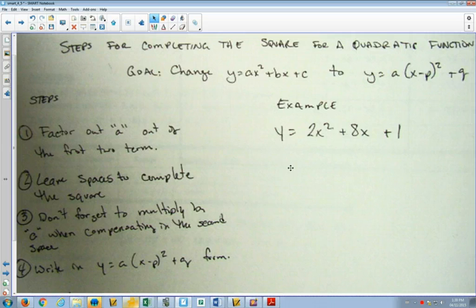So, the first difference in step one, we factor out a instead of dividing by a. Last time, we left spaces on both sides of the equation. This time, we leave two spaces on the same side of the equation. And then, we can write it in standard form.